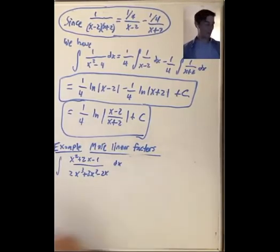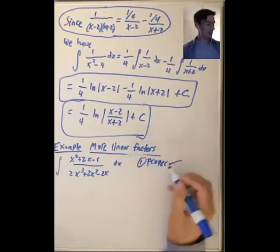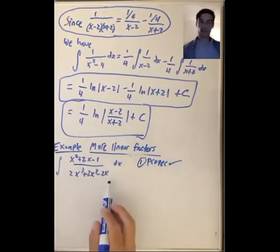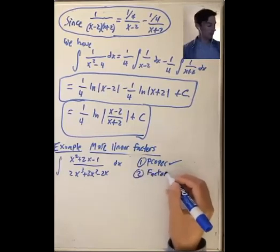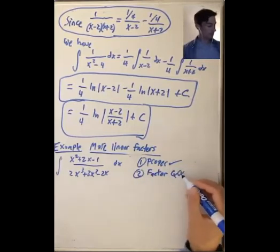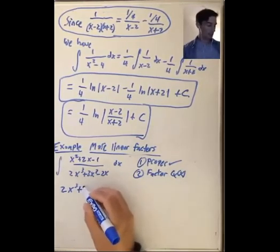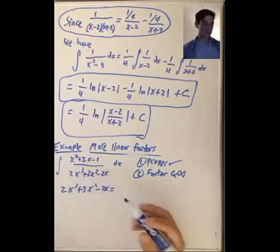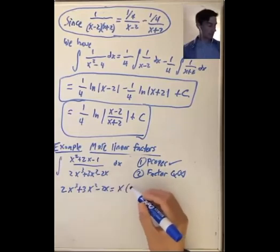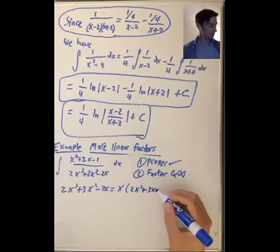This looks complicated. The first thing is to check that this is proper, and it is: the degree of the numerator is 2 and the degree of the denominator is 3. So the next thing we want to do is factor q(x), the denominator. There's one factor I see right away: there's an x in each of the terms, so we get x times 2x squared plus 3x minus 2.